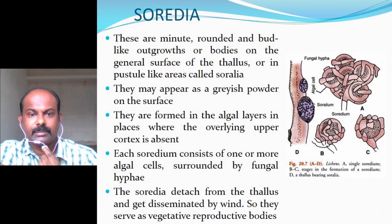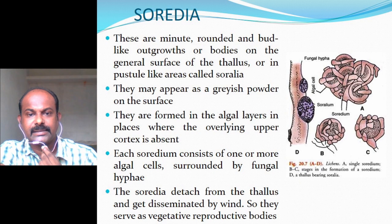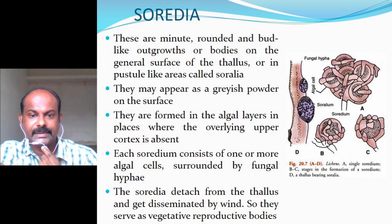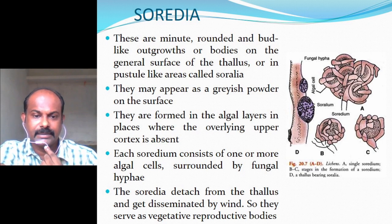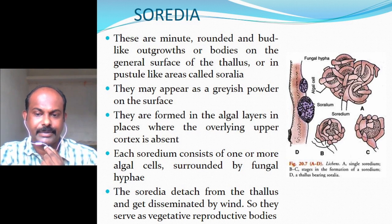Soredia are minute, rounded and bud-like outgrowths on the general surface of the thallus or in pustule-like areas called soralia. They may appear as grayish powder on the surface and are formed in the algal layer where the overlying upper cortex is absent. Each soredium consists of one or more algal cells surrounded by fungal hyphae. Soredia detach from the thallus, get disseminated by wind, and also serve as vegetative reproductive bodies.